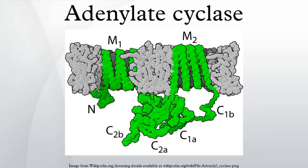cAMP is an important molecule in eukaryotic signal transduction, a so-called second messenger. Adenylate cyclases are often activated or inhibited by G-proteins, which are coupled to membrane receptors and thus can respond to hormonal or other stimuli. Following activation of adenylate cyclase, the resulting cAMP acts as a second messenger by interacting with and regulating other proteins such as protein kinase A and cyclic nucleotide-gated ion channels.